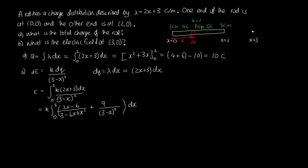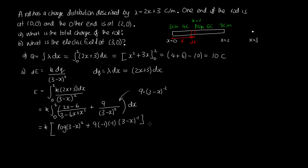Since (2x minus 6) is the derivative of (3 minus x) squared, that term integrates to log of (3 minus x) squared. The remaining term, 9 divided by (3 minus x) squared, equals 9 times (3 minus x) to the minus two, which integrates to 9 times (3 minus x) to the minus one, with a factor of minus one from the chain rule — evaluated from 0 to 2.